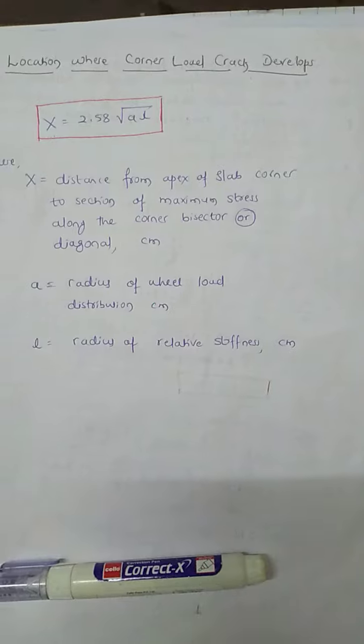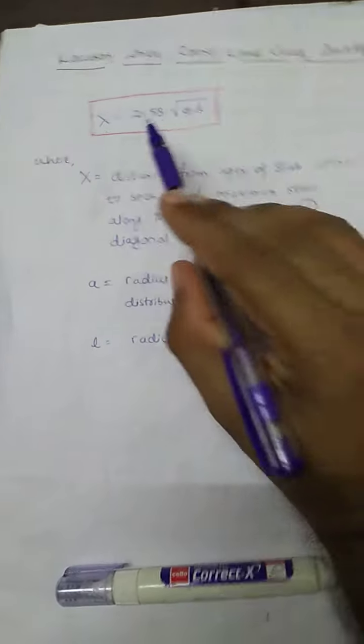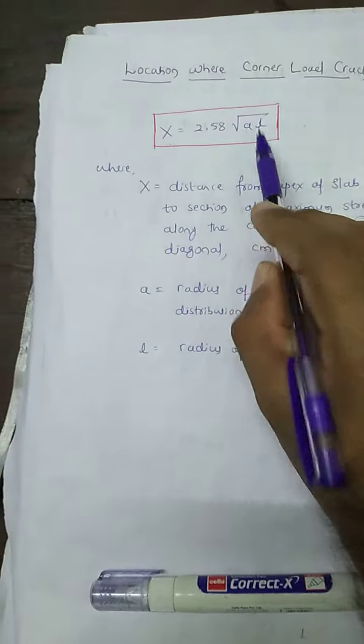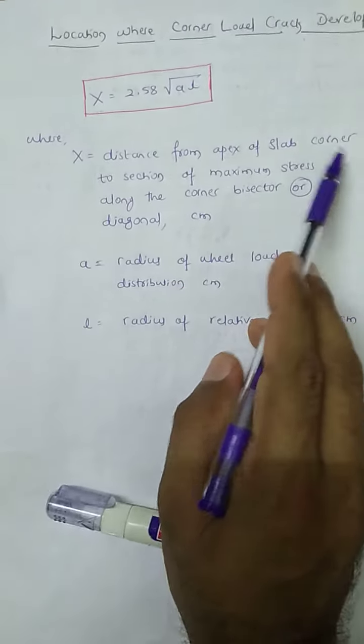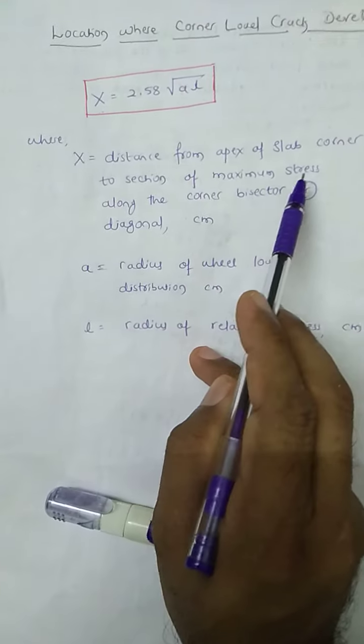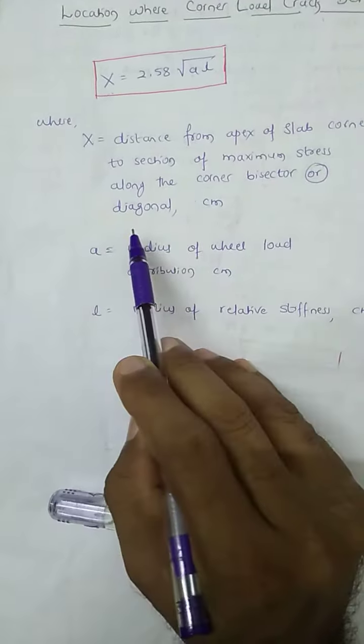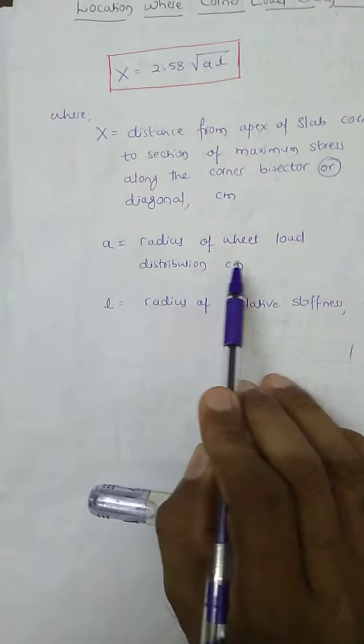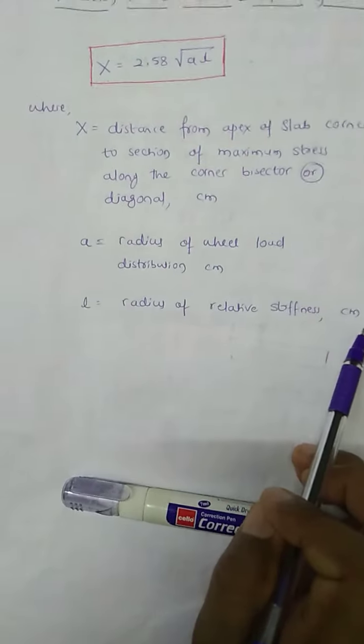This distance x from the corner is given by the relation x equals 2.58 square root of aL, where x is distance from apex of slab corner to section of maximum stresses along the corner bisector or diagonal in centimeter, where small a equals radius of wheel load distribution in centimeter, and small l equals radius of relative stiffness in centimeter.